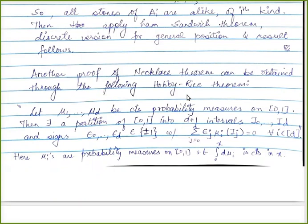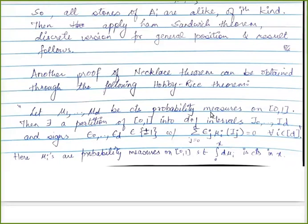Another proof of the necklace theorem can be obtained from the Hobby-Rice theorem. The Hobby-Rice theorem is about probability measures: if you have continuous probability measures μ_1, ..., μ_d on the closed interval [0,1] — where the integral function ∫_0^x dμ_i is continuous in x for each μ_i — then there is a partition of [0,1] into d+1 intervals and signs ε_0,...,ε_d (each ±1) such that the sum of signed measures on each interval is zero. I leave it as an exercise to prove the necklace theorem using the Hobby-Rice theorem.